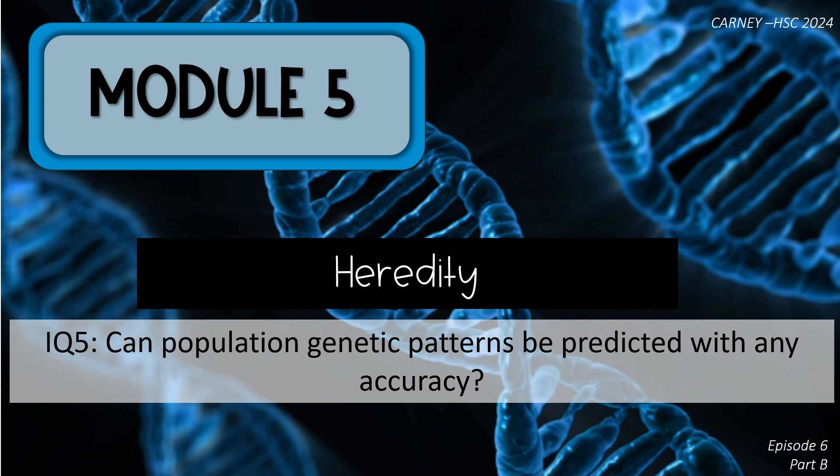Welcome to Episode 6, Part B of Module 5, Heredity. We're finishing off this video series with Inquiry Question 5: Can population genetic patterns be predicted with any accuracy?